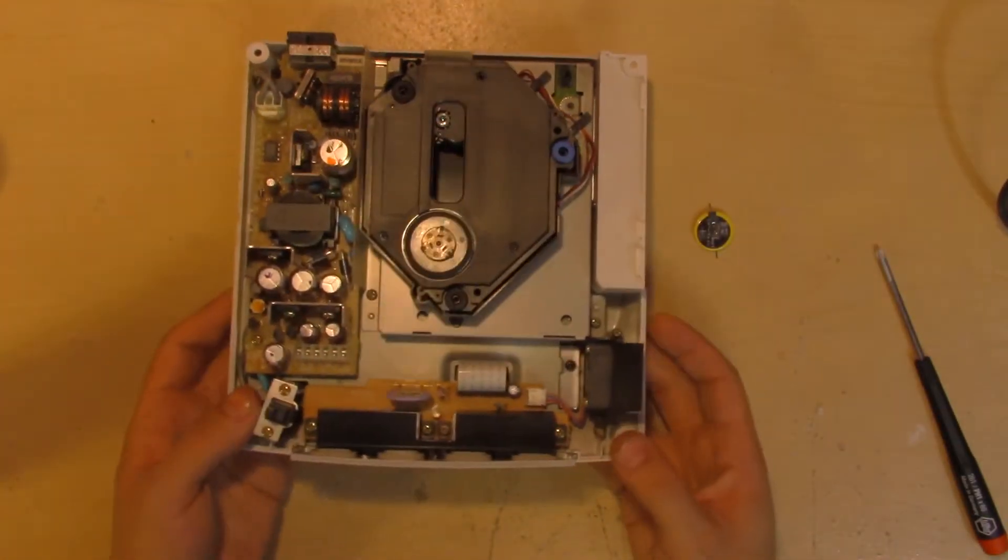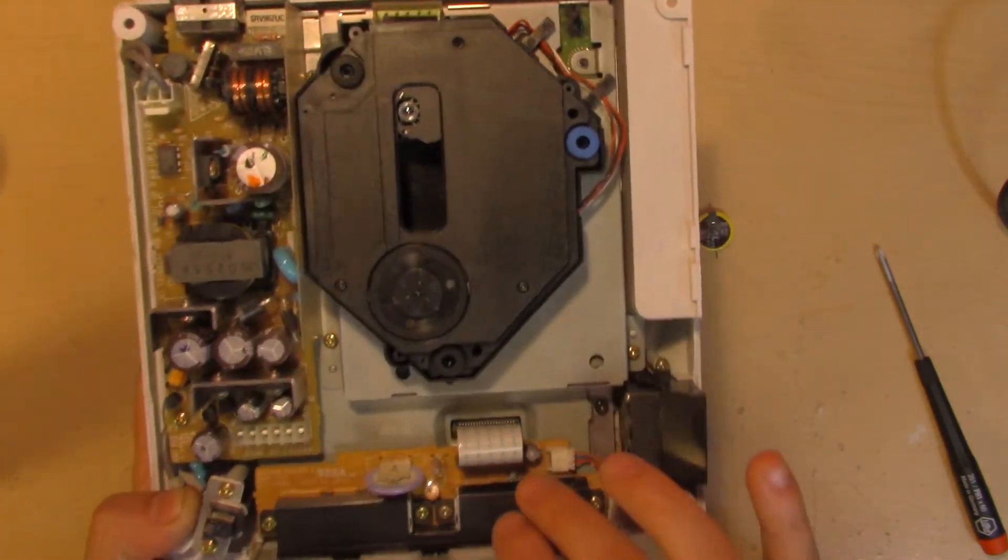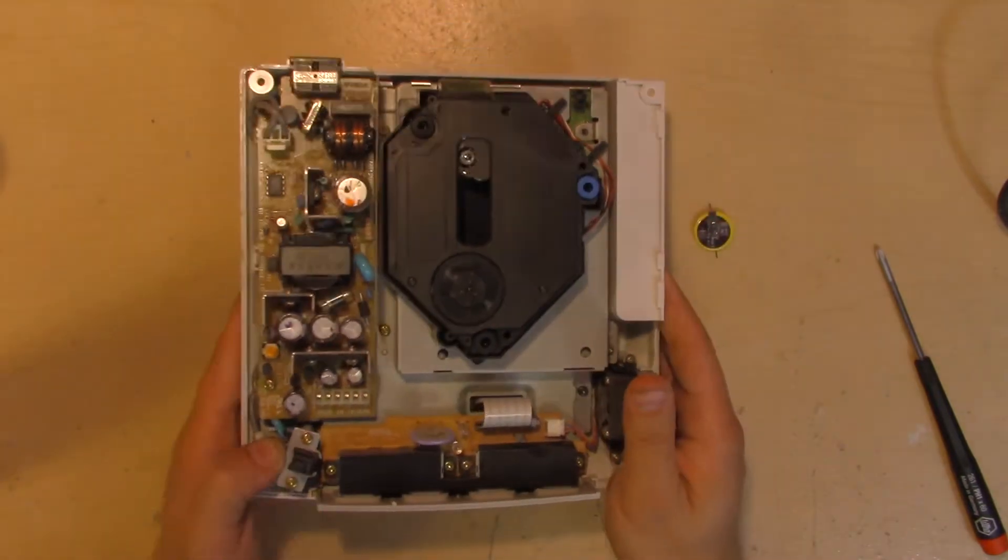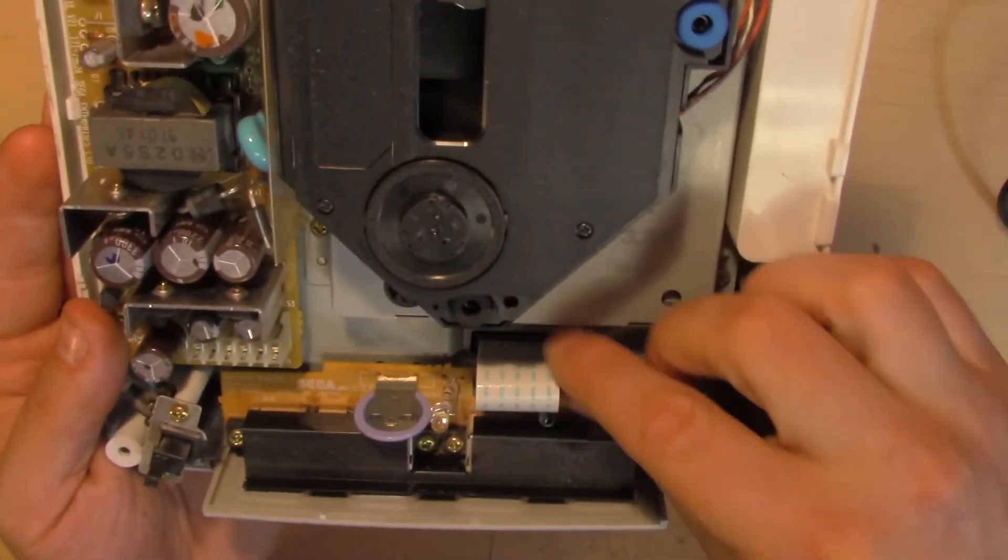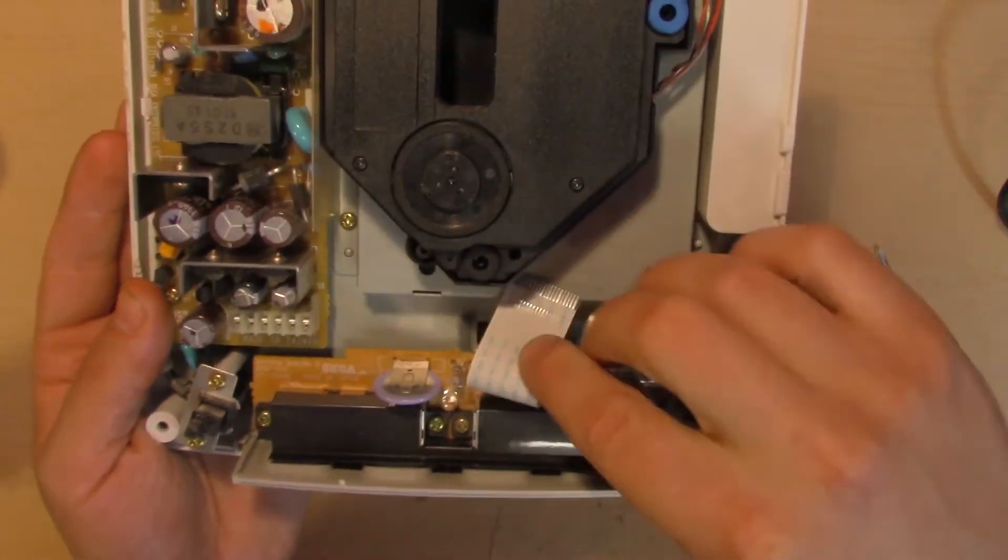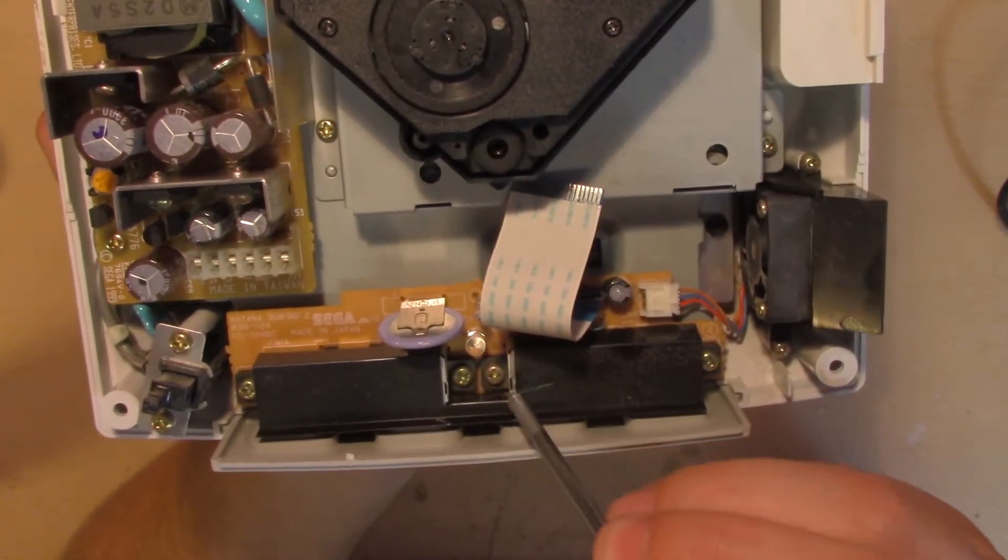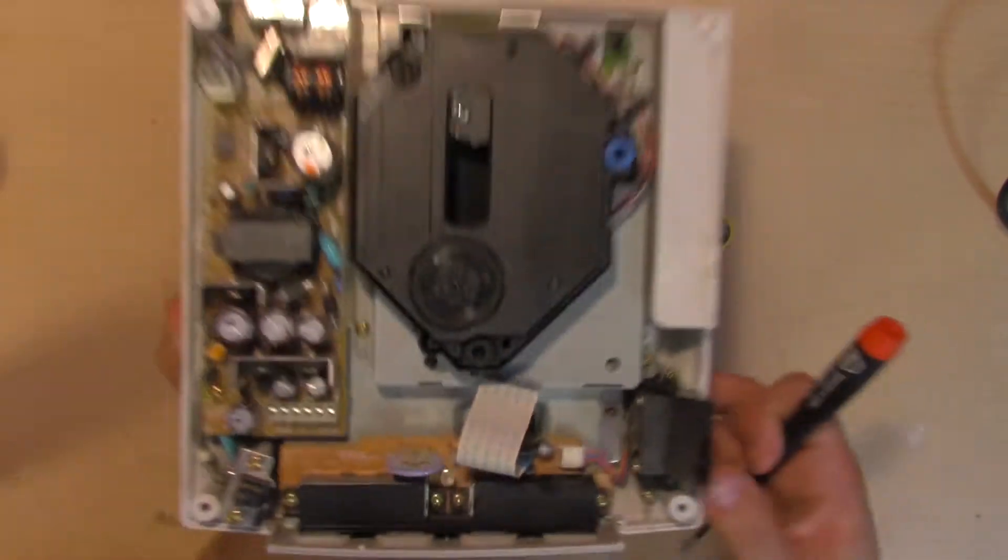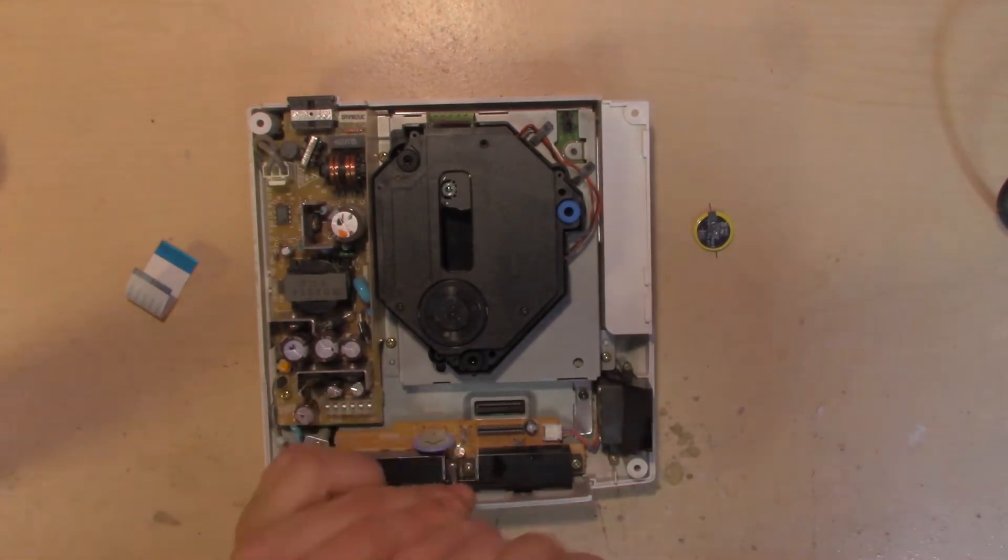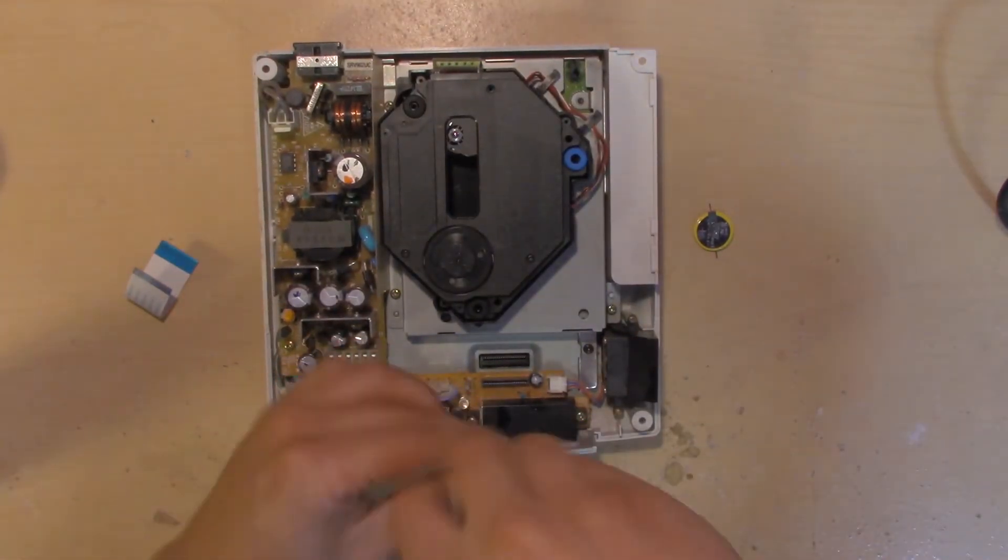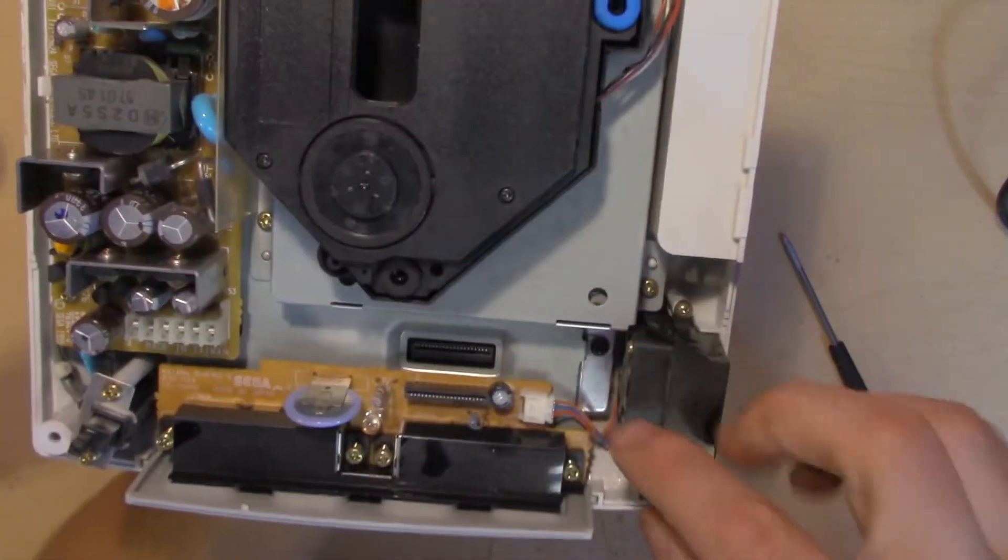And here we are. Here's the internal battery. We're going to want to be removing this from the board, but it's easiest first to remove the board from the actual shell itself. So let's get started by removing this ribbon cable right here. Just pull it up, nice and easy. And then we're going to want to remove these 4 screws here. 1, 2, 3, 4. Now that those 4 screws are out, we're ready to pull this board out.